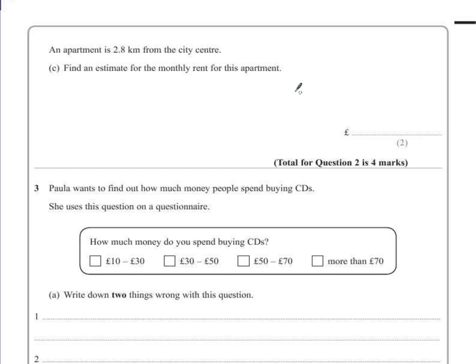Part C. An apartment is 2.8 km from the city center. Find an estimate for the monthly rent for this apartment. This is a two mark question, so we're going to have to show some form of working out. 2.8 km from the city center. Let's go back to our graph.